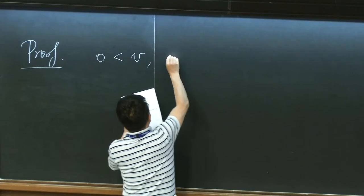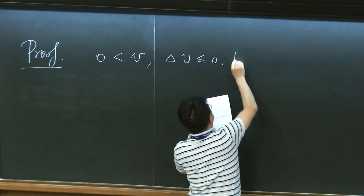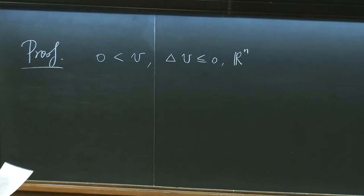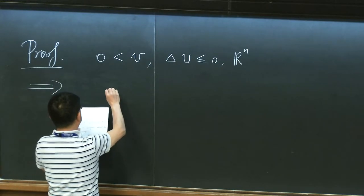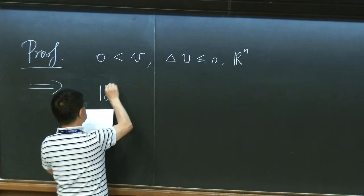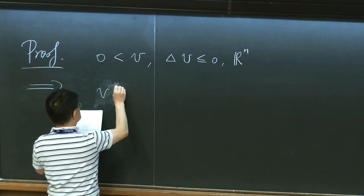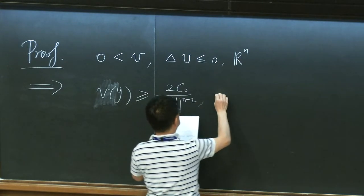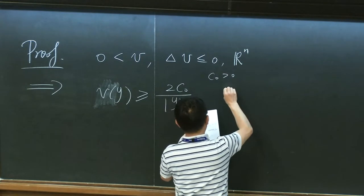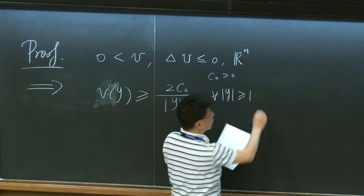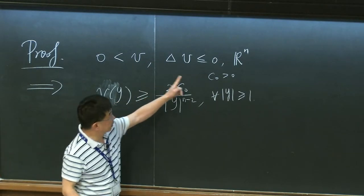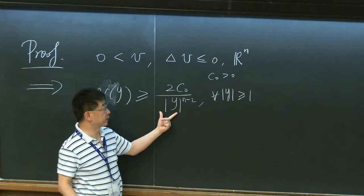Because our solution is actually superharmonic — V is superharmonic — because of this cone structure, we only deal with superharmonic functions. That will imply by the maximum principle that zero is positive for all y greater or equal than 1. This follows from the maximum principle, comparing with the harmonic function on the boundary of the unit ball. If you take C0 less than the minimum of V, we have this inequality.